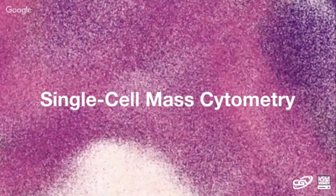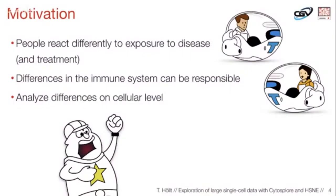Today I want to talk about our work on single cell analysis, and we have a nice tool which is a mass cytometer. The motivation is that people just react differently to disease and treatment. If you treat two patients with the same disease, it's not necessarily true that they show the same reactions. Usually there are differences in the immune system responsible for this. With mass cytometry, we can actually analyze immune cells taken from blood or tissue samples on a single cell level.